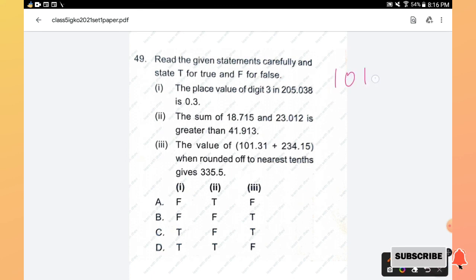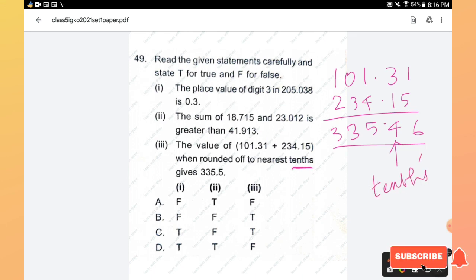Then the value of 101.31 + 234.15 when rounded off to nearest tenths gives 335.5. Now check it out. First we will add the numbers 101.31 + 234.15 which gives 335.46. It is said that it is rounded off to nearest tenths. Tenths is here. Now if you round off this tenths part, the nearest when rounded off is 4, so this particular part is rounded to 5, so 335.5. When rounded off to nearest tenths gives 335.5 is the right answer. So this statement is true. Hence false, false, true. So your answer is option B is the right answer.